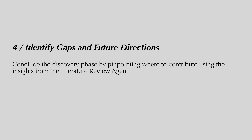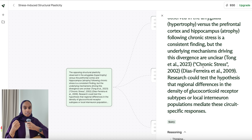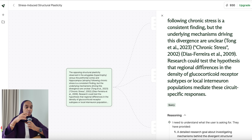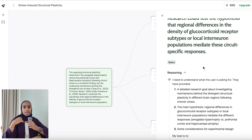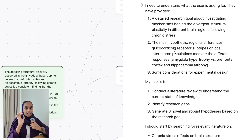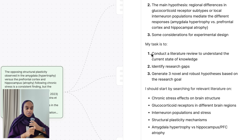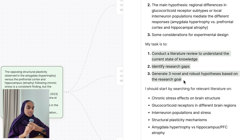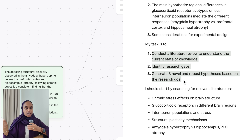Last but definitely not least, we're going to conclude this discovery phase by picking out future directions or gaps in the literature. One of the most useful things Liner does is help you pinpoint where you can contribute using the hypothesis generator. It will conduct a literature review to understand the current state of knowledge, identify more research gaps, and generate three novel and robust hypotheses based on the research goal — following on from what I started.